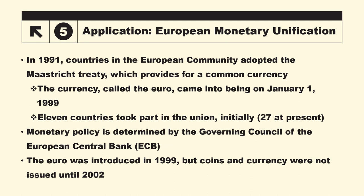The early example of a currency union is the American states. The more recent example is the European Monetary System. In 1991, the European Community adopted a treaty providing for a common currency. The European Union currency is called the Euro, which came into being on January 1st, 1999.